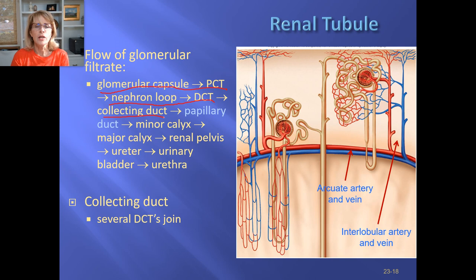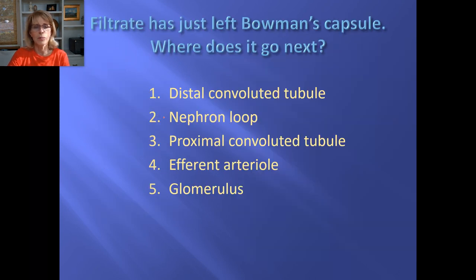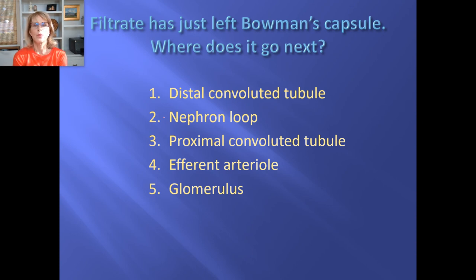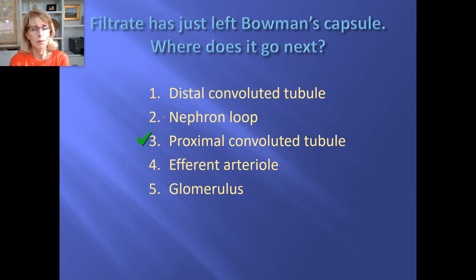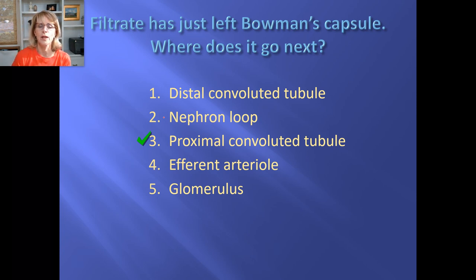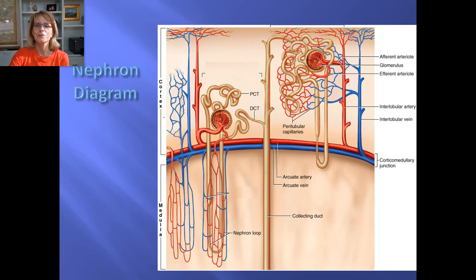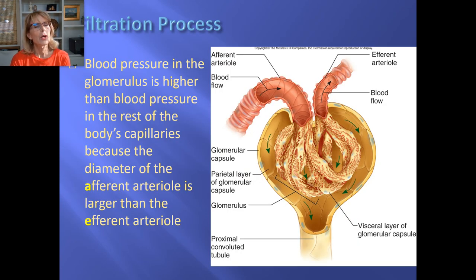Quick review: filtrate just left Bowman's capsule — where does it go next? It goes to the proximal convoluted tubule, then down the descending limb of the nephron loop, up the ascending limb, to the distal convoluted tubule. It never goes into an arteriole. We'll start at the beginning of the next video.